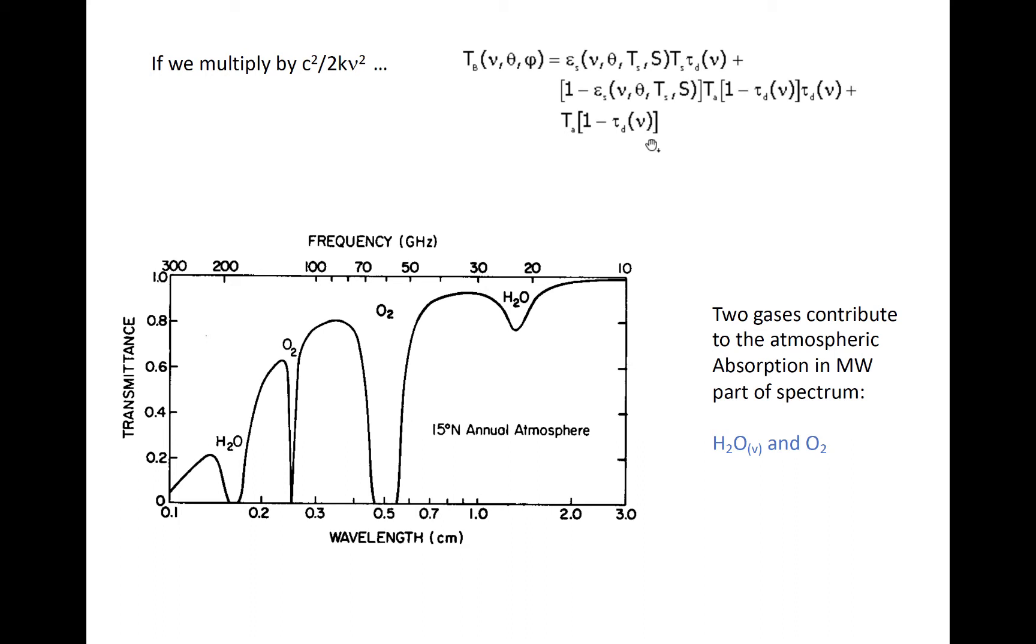Two gases, water vapor and molecular oxygen, contribute to absorption of microwaves, as seen in this piece of the absorptance spectrum of the atmosphere. Therefore, the direct transmittance of the atmosphere is dependent heavily on wavelength and water vapor concentration in the atmosphere. Like in the IR, we can take advantage of these absorption bands to garner information about profiles of temperature and humidity in the atmosphere using multispectral sounders.